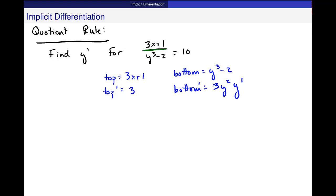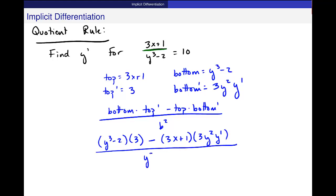Okay? So now I use the quotient rule: bottom times the derivative of the top minus the top times the derivative of the bottom over the bottom squared. Okay? This is just all for the left side. I haven't done anything with that 10 yet. So I get y cubed minus 2 times 3 minus 3x plus 1 times 3y squared y prime over y cubed minus 2. And that's squared.